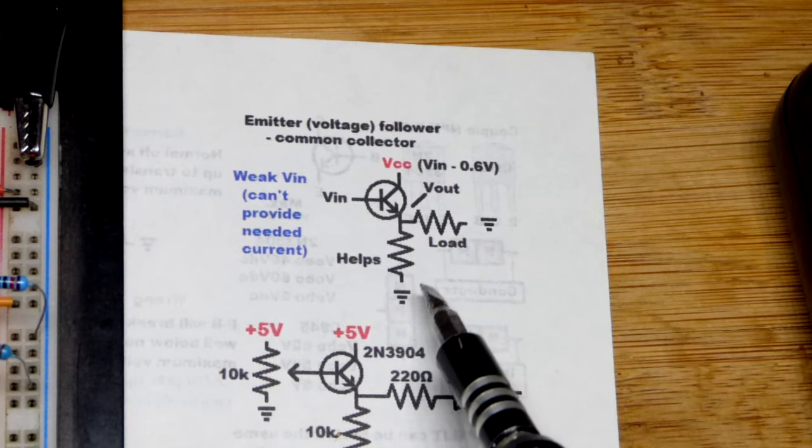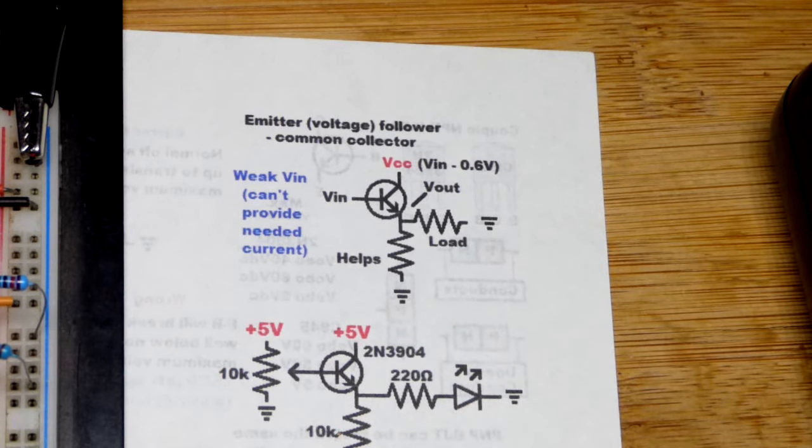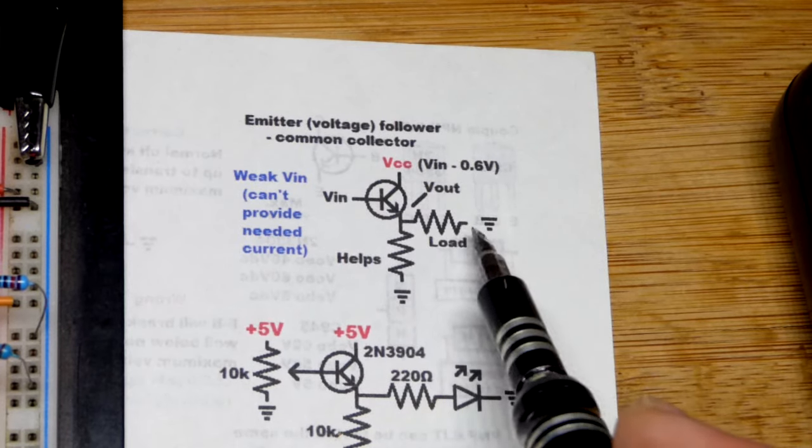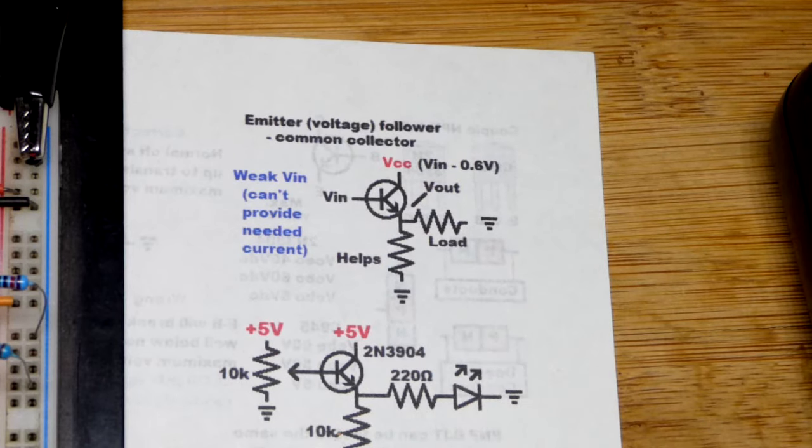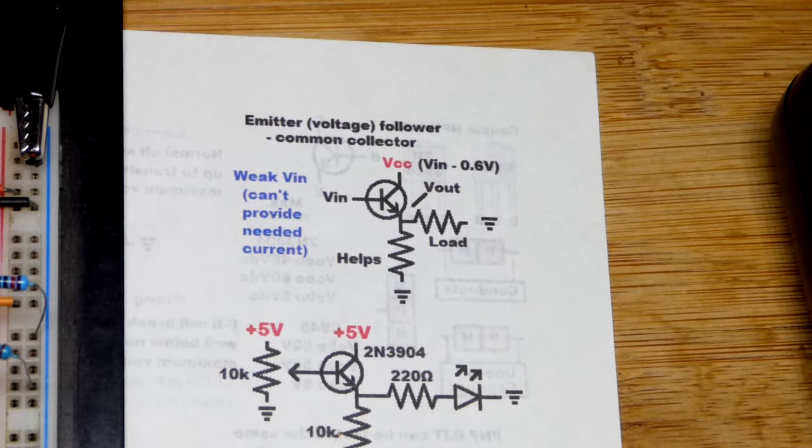That is kind of an overview of this quick schematic for an emitter follower. The power needed to power the load comes from the supply there. So you've got to make sure the power supply can provide the load and that.